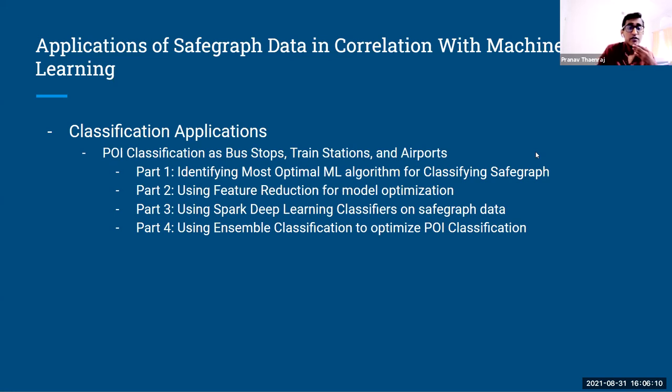So part one was first just identifying the most optimal ML algorithm for classifying SafeGraph data. The second part was using feature reduction and model optimization through model tuning and things like PCA, SVD, and LDA. And part three was using a Spark Deep Learning classifier, the multi-layer perceptron classifier to classify SafeGraph data. And part four was using ensemble classification to pull together these ML algorithms and optimize the POI classification.